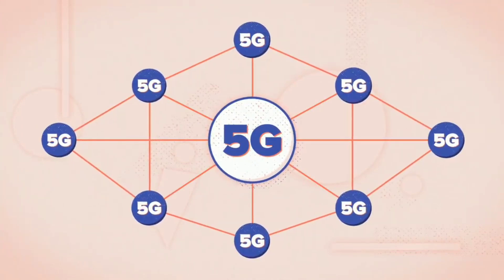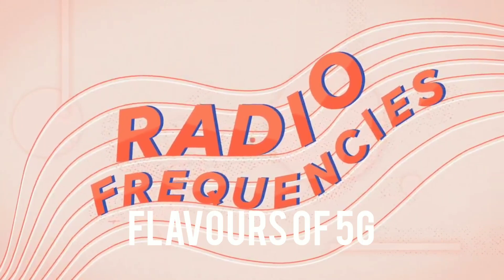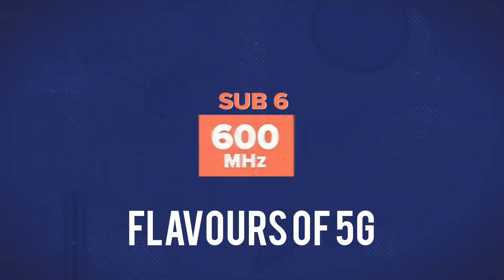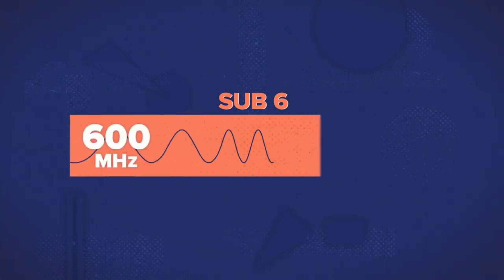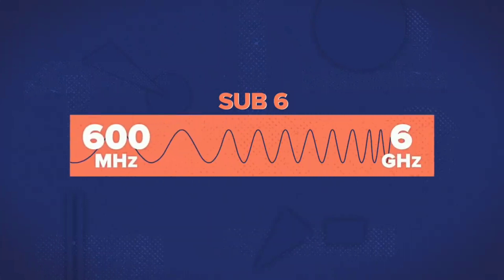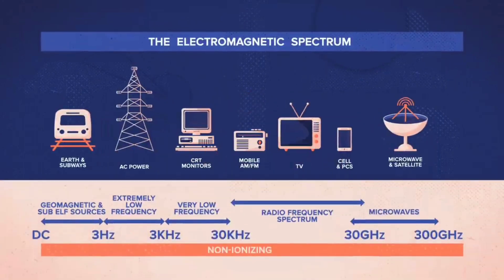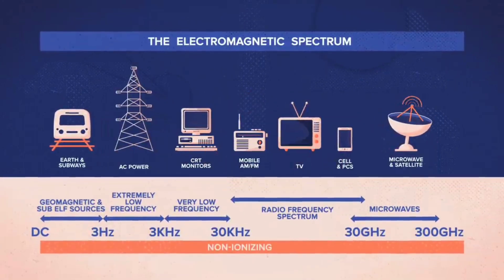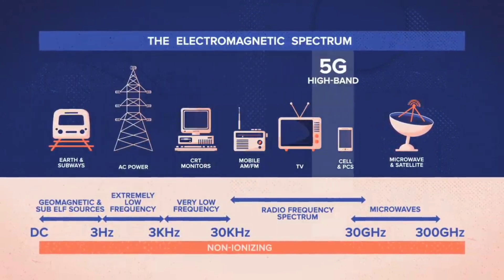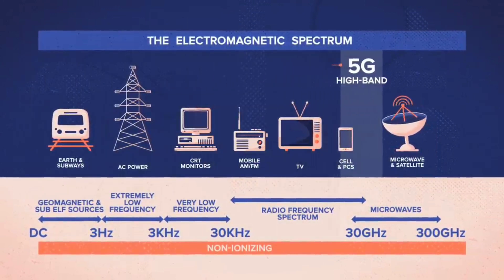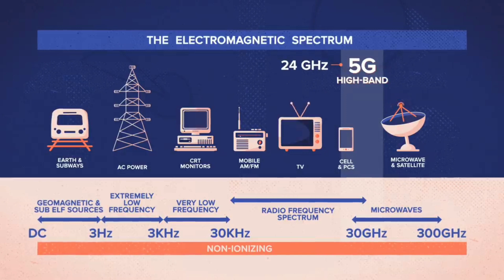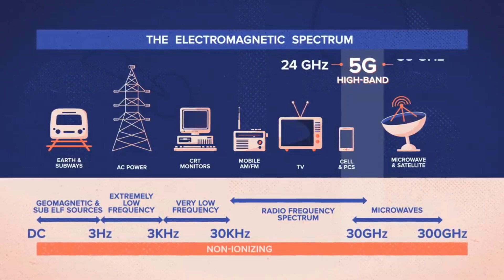Now let's discuss the flavors of 5G. 5G can use low, mid, and high band frequencies. Lower frequency waves can travel farther but are slower; higher frequency waves can travel faster but can only go limited distances.